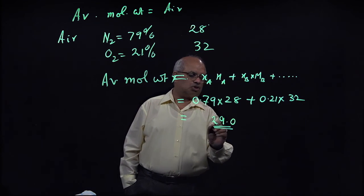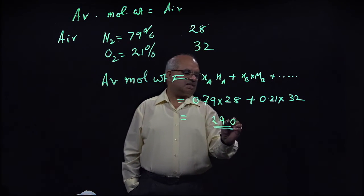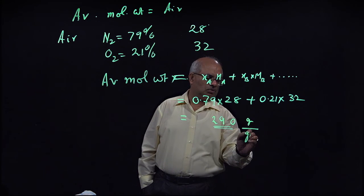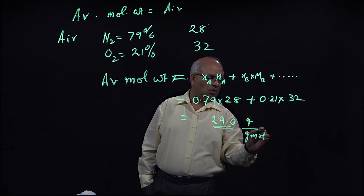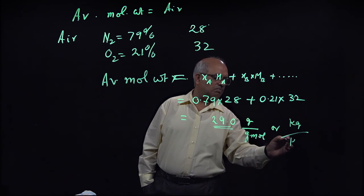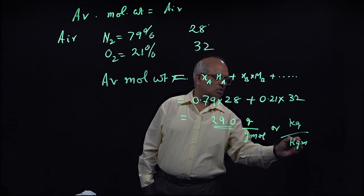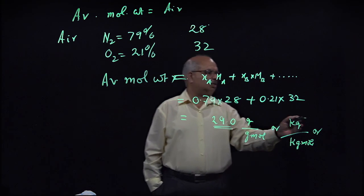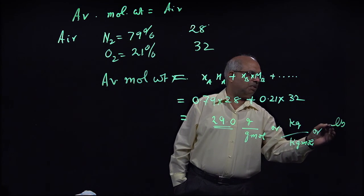Basically what this means is 29 grams per gram mole, or we can also say kilograms per kilogram mole, or the same thing, 29 will not change pounds per pound mole.